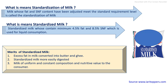The main difference between milk types is the minimum fat content and minimum SNF (solids-not-fat) requirement in the final product. This fat content and SNF percentage is adjusted during the standardization process.